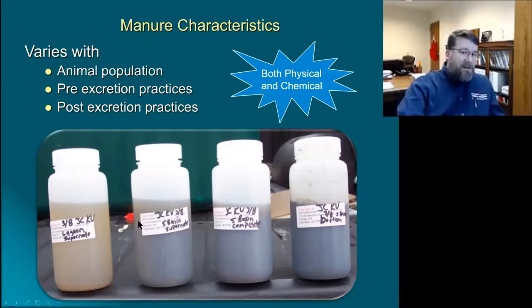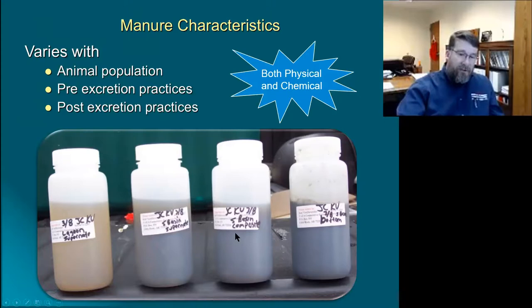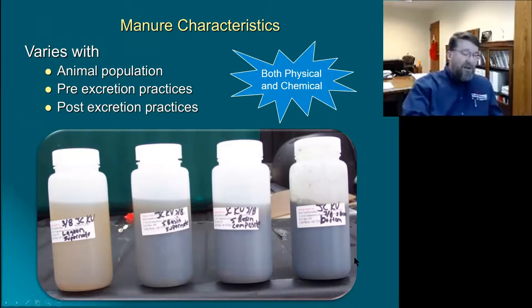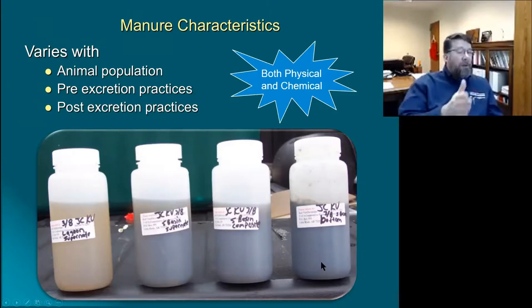The first settling basin bottle is the supernatant or top water — fairly dark at the bottom, lighter at the top. The third bottle is a composite sample from the top of the pond all the way to the bottom of the settled solids — much darker with very little lighter coloration at the top. The final sample is the settled solids or sludge at the bottom, which looks fairly homogeneous with no lighter color at the top. This illustrates that even within a single storage unit you get significant variability.